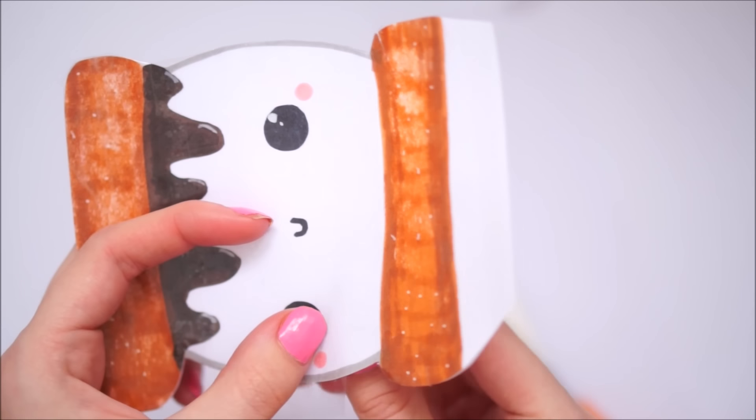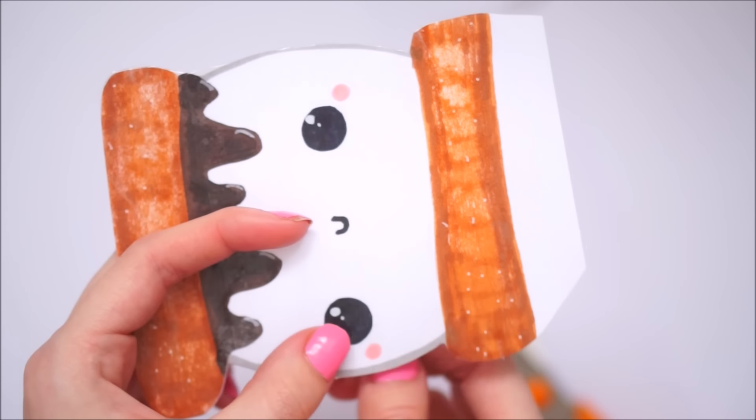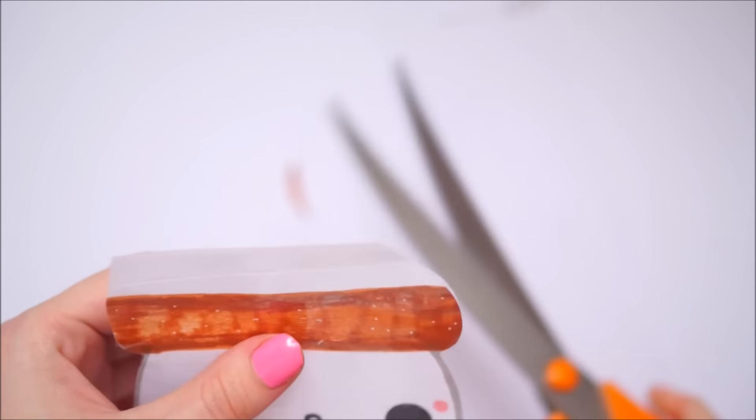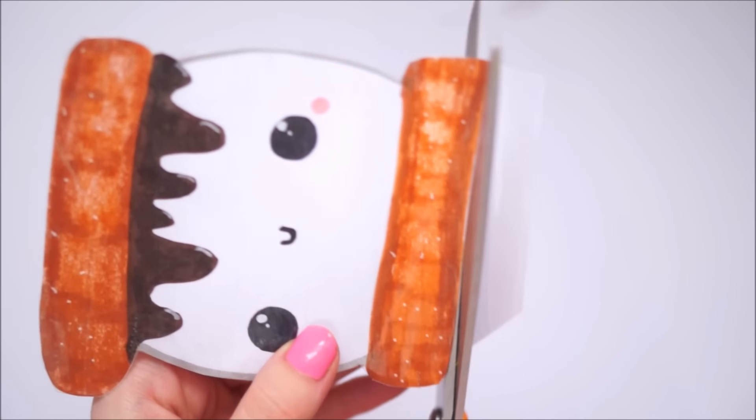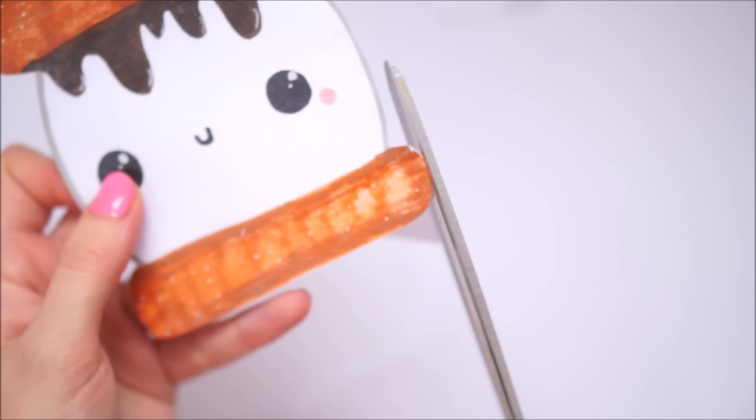Once you get all the way around the shape and you get back to the bit where you've left that piece of paper, you'll then want to just cut this off before taping up those two sides of the biscuit.